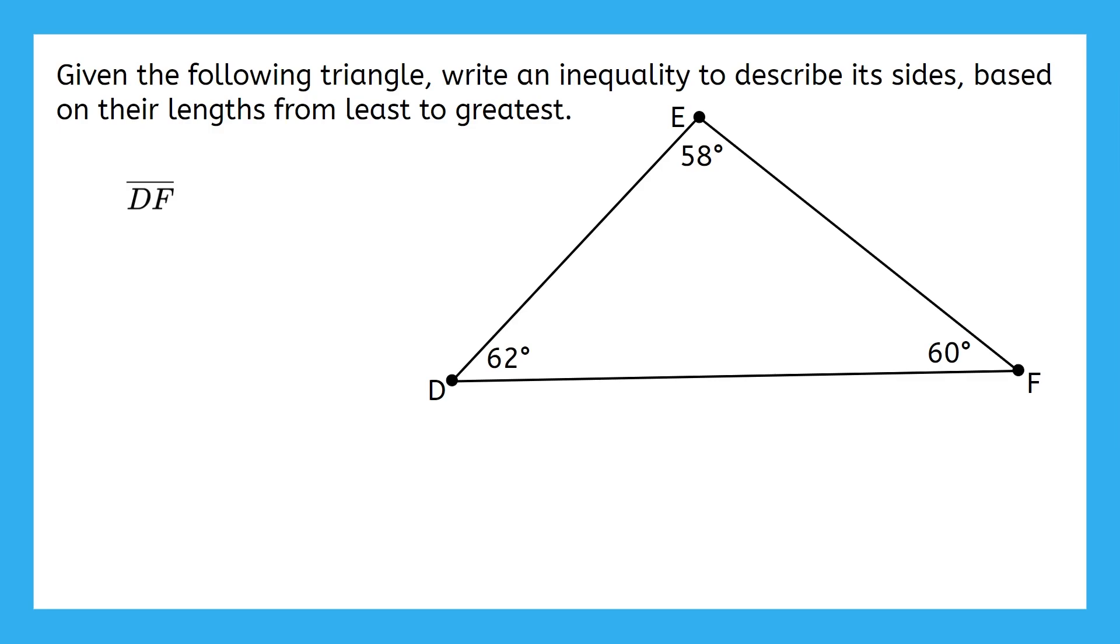Going in order, our next smallest angle is 60 degrees, and the side opposite to it is side DE. So we can write that next in our inequality. Then finally, the largest angle of 62 degrees is across from side EF. So we can write that in the inequality too. And that's our answer.